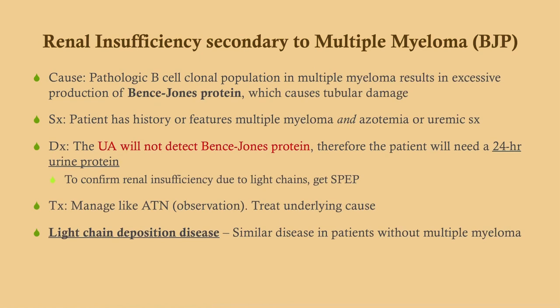Renal insufficiency secondary to multiple myeloma from Bence Jones proteins causes tubular damage. On diagnosis, urinalysis does not show protein, but a dipstick will detect protein in the urine — Bence Jones protein is not detected by standard urinalysis. This is similar to myoglobinuria in rhabdomyolysis: the dipstick is positive while standard urinalysis is not.